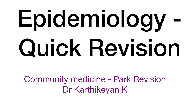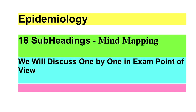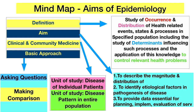Epidemiology is a vast chapter in the community medicine book, and I have put it in a nutshell using the innovative method of mind mapping. It will be extremely useful for your exams. There will be a final question and short questions on epidemiology. About 80 pages of epidemiology have been covered in a few minutes in this video. The definition: it is the study of occurrence and distribution of health-related events, states, and processes in specified populations.